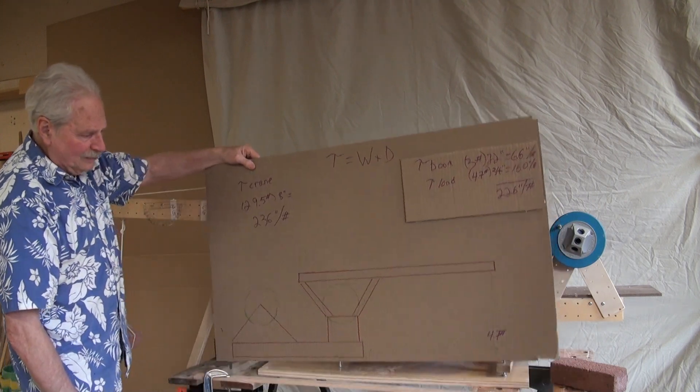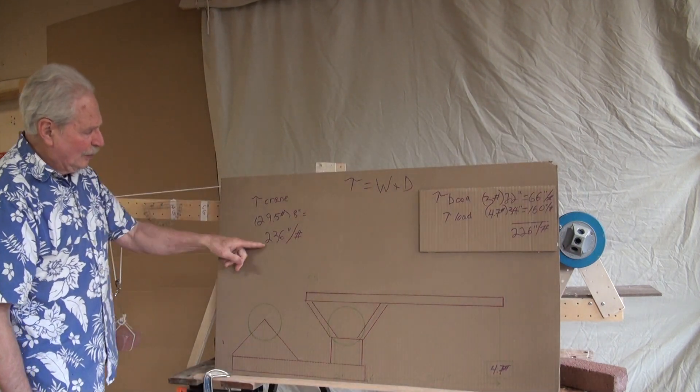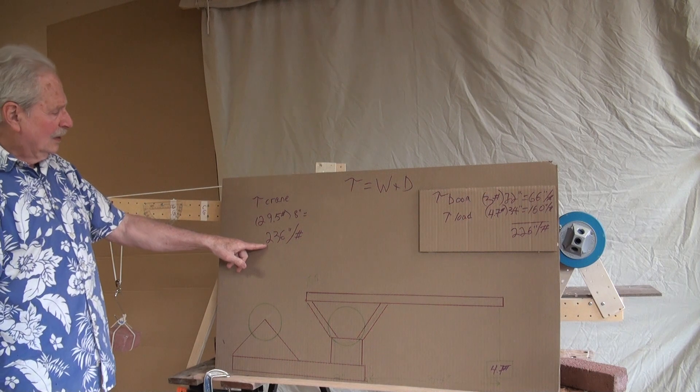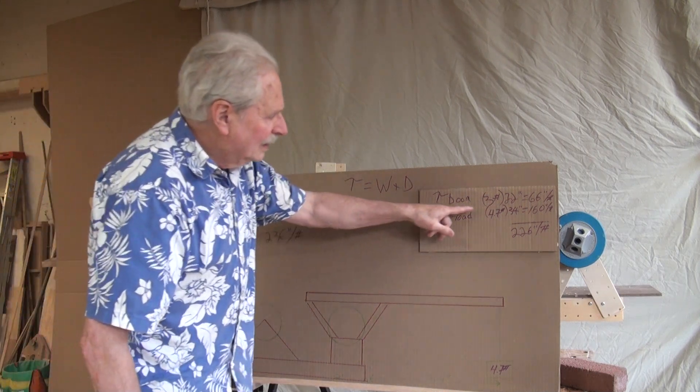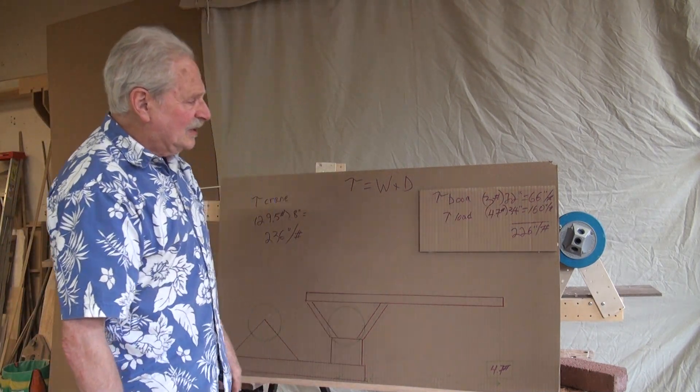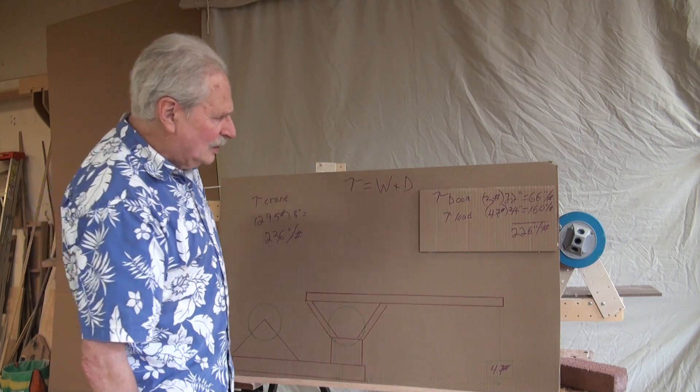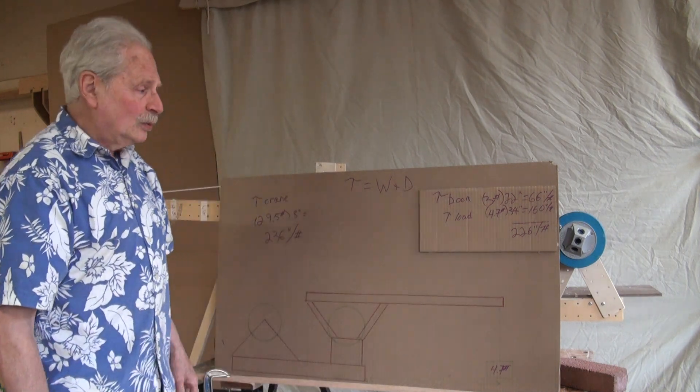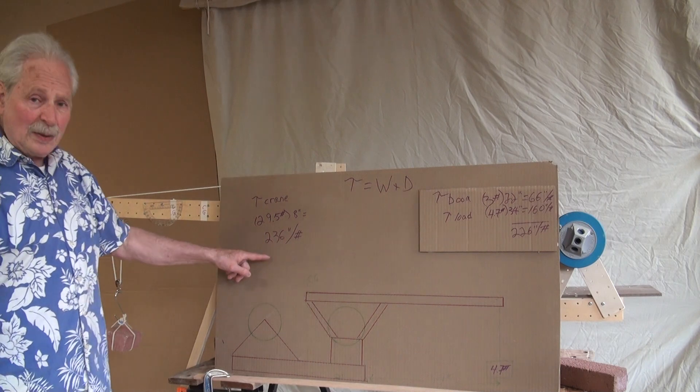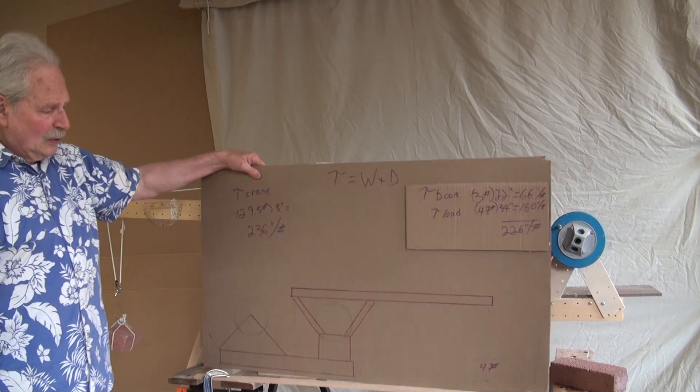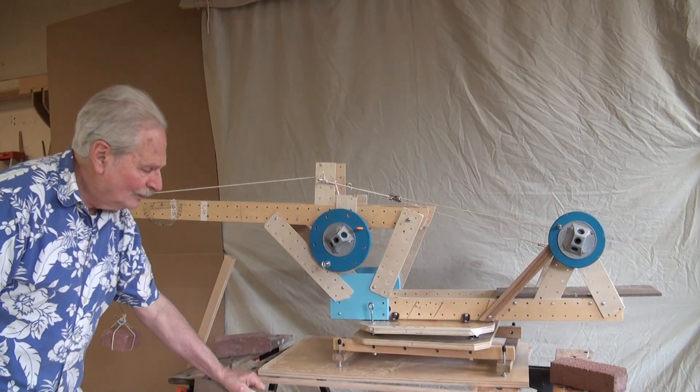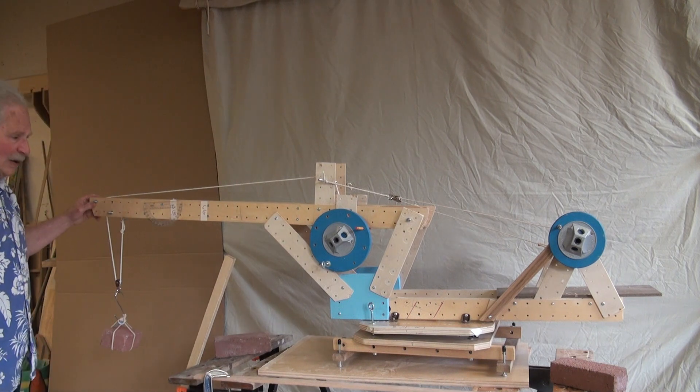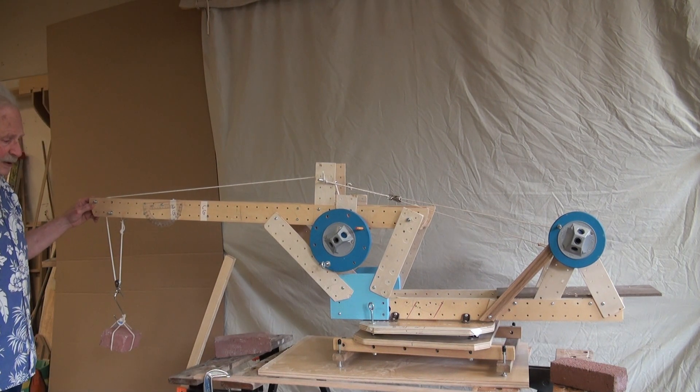So when we run the numbers, 236 inch pounds of torque for the crane. There's the boom which is 66 and the load is 160. So the total of 226 is just a little bit less than 236 which is why even with the load way out here it's not tipping over. But almost.